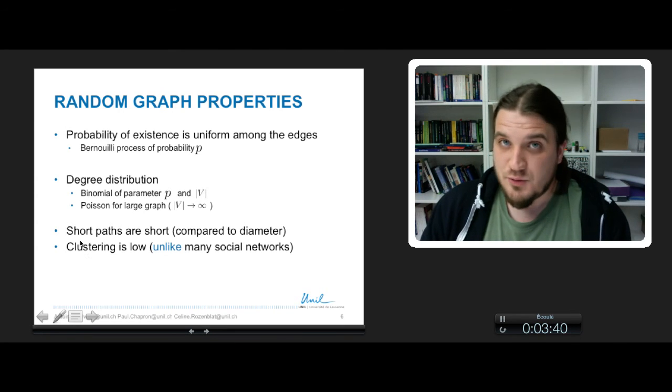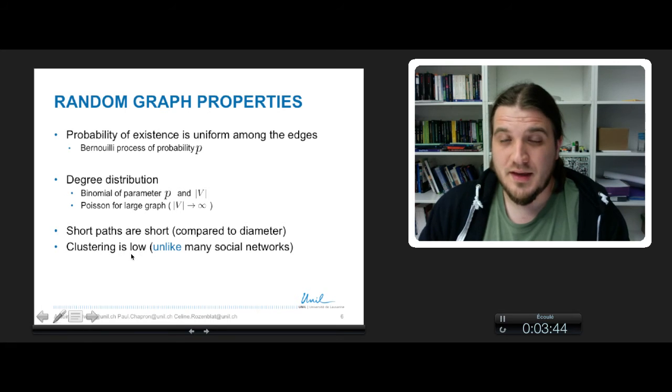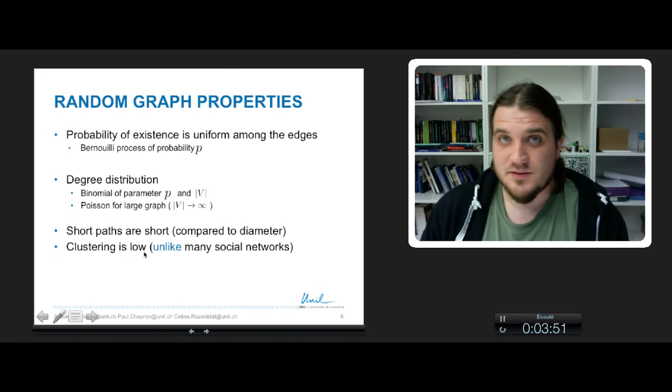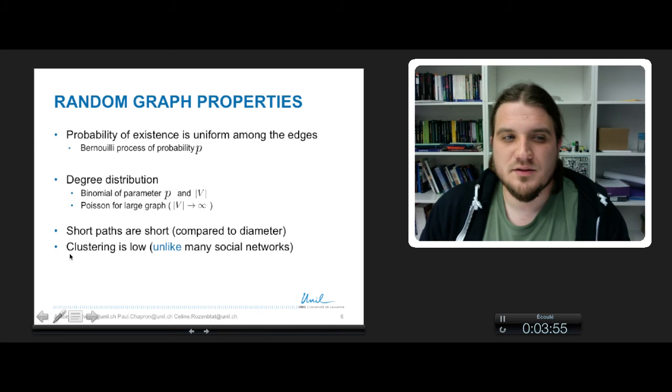But there is another property that is not so cool. Clustering is low. And in natural networks, in real-world networks, the clustering is high. It's a characteristic, for example, of small-world networks. So this is not a very cool property for this kind of model.